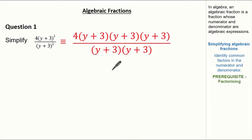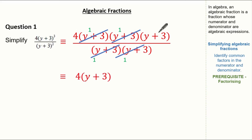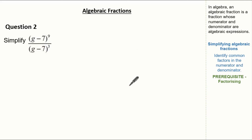Just like we did before, let's cancel out our common factors. I can cancel these, and I can also cancel these, thus leaving me with 4(y+3) as my numerator and 1 times 1 — that gives me 1 — as my denominator. So I'm going to leave my simplified expression as this. Now let's use the same concept and simplify this question.